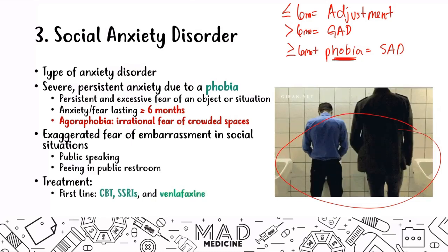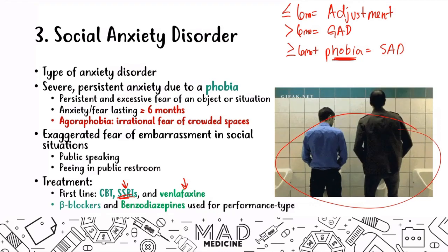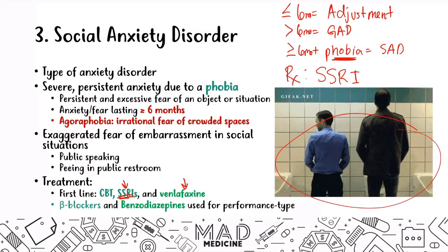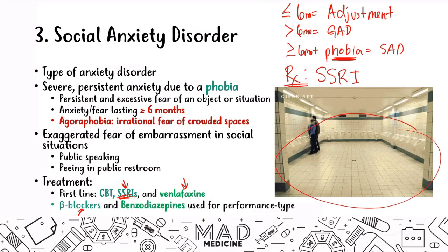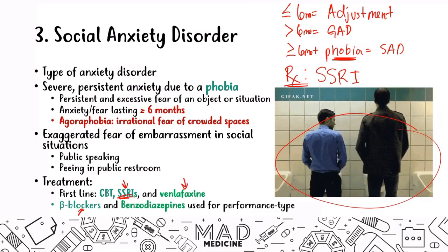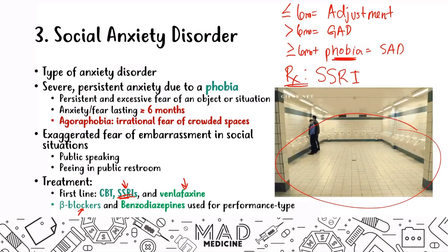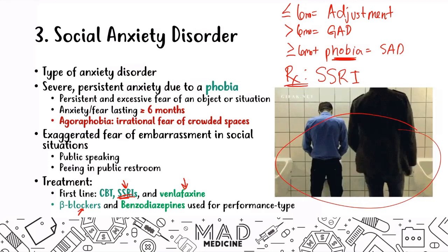The treatment for social anxiety disorder is first-line SSRIs, but you can also give venlafaxine. You can also give beta blockers and benzodiazepines for performance-type anxiety, but be aware of the side effects: beta blockers can cause a decrease in contractility, and benzos can cause a depressed state of mind as well as having high abuse potential. So you want to be careful when prescribing these drugs to treat social anxiety disorder.